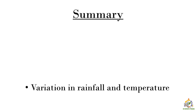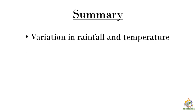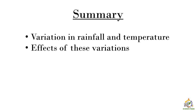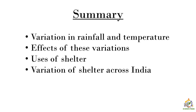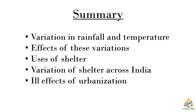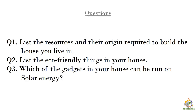Let's summarize the session. Firstly, we saw the variation of rainfall and temperature in India and their effects mainly on food, shelter, and clothing. Then we saw the uses of shelter, the variation of shelter across India, the ill effects of urbanization, and eco-friendly houses. Here are some questions — please pause the video, note down the questions, and write the answers to them. Thank you.